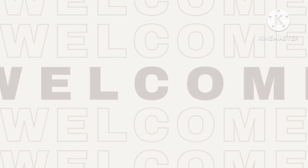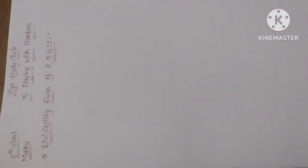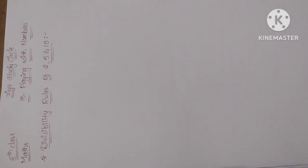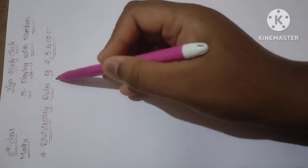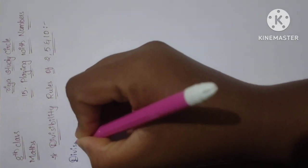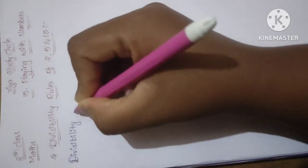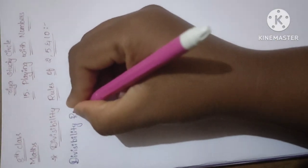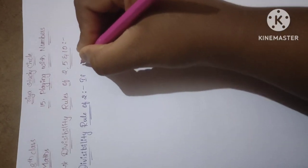Hello everyone, welcome to my channel Rhea Study Circle. Before starting the video, please do like, share and subscribe my channel and click the bell icon. Today I am going to explain about 8th class Maths chapter number 15, Playing with Numbers. In that, firstly I want to explain about divisibility rules of 2, 5, and 10. All the divisibility rules are very easy, but you have to remember which divisibility rule is for which number.